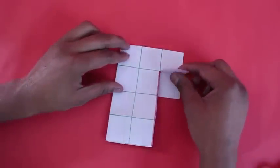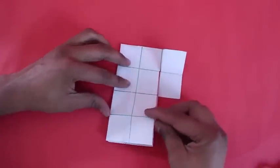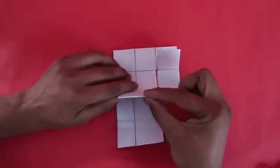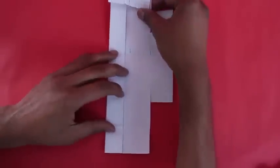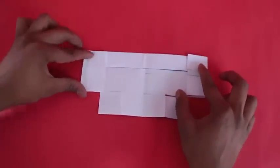Now fold one square. This is the tail wings and these are the main wings. Repeat this on the other side.